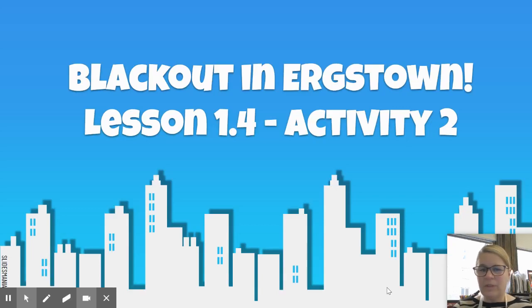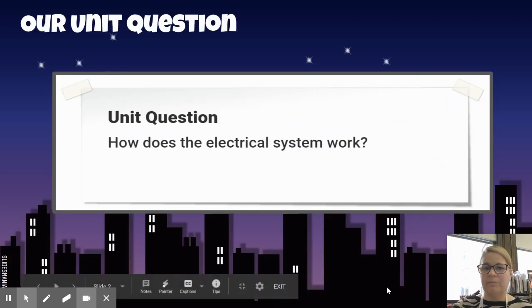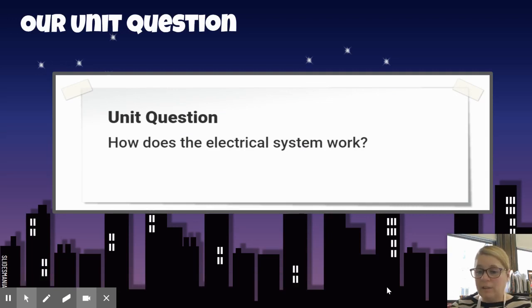Hi, 4th grade. Let's continue with our science unit, Blackout in Erkstown. We're in lesson 1.4 and this is our second activity. Let's review what we're trying to do in this entire unit. We are trying to figure out how the electrical system works. That is our goal. That is our purpose for this entire unit.